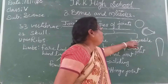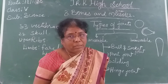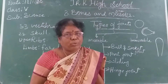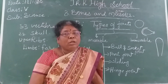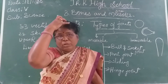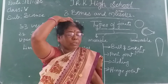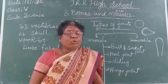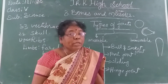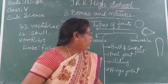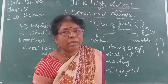Coming to the immovable joint - where you will not find any movement. The skull joints and the ribcage and breast bone show immovable joints. If there were movable joints in the skull, our brain would have no protection. So in the skull, ribcage, and breast bone, we have immovable joints. Thank you children, have a nice day.